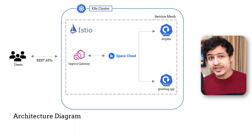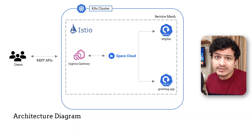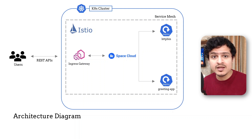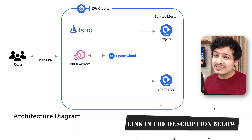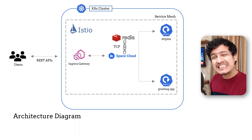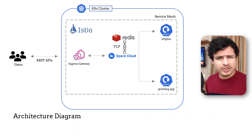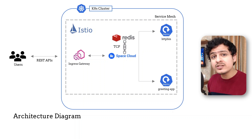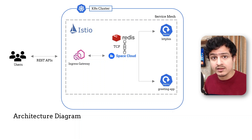SpaceCloud is a dynamic API server which auto-generates a GraphQL API for us, so we don't have to. I'll put a link to it in the description below. SpaceCloud has a dependency on Redis which has a TCP-based API. That shouldn't be a problem for us because Istio supports working with TCP as well.